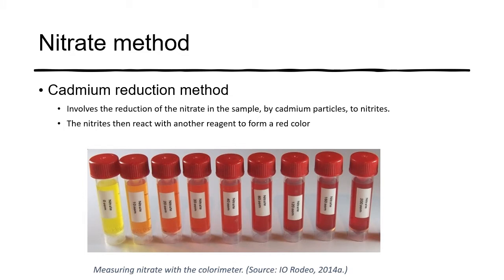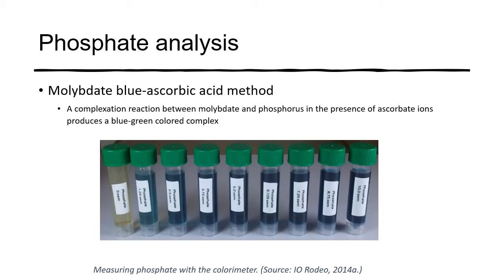Nitrate is measured with the cadmium reduction method. The kit provides a solution where cadmium particles reduce the nitrate to nitrite, and then the nitrites react to form a red color; again, you'll use the color wheel. Phosphate is analyzed by the molybdate blue ascorbate method — a complexation reaction between molybdate and phosphorus in the presence of ascorbate ions, which produces a blue-green color. More details on these tests are provided in the lab write-up and additional details from API have been posted on the course blog.